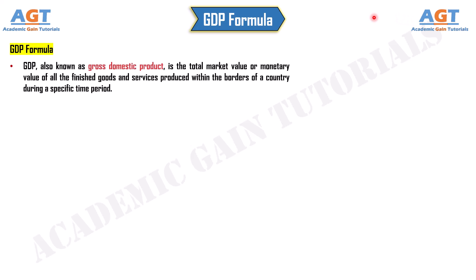GDP, also known as gross domestic product, is the total market value or monetary value of all the finished goods and services produced within the borders of a country during a specific time period.